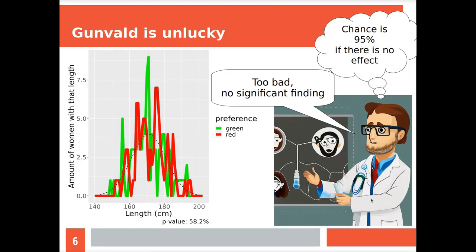You can do such a survey, and I will show you how Gunvald will get a publication from this survey. He's very smart to measure 20 things. In most cases Gunvald will be unlucky. Here we have the same histogram with women's length on the x-axis and amount of women on the y-axis. But now they are split into two groups: women that prefer green over red and women that prefer red over green in red. They seem similar enough by eye.